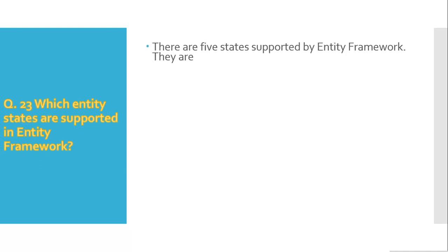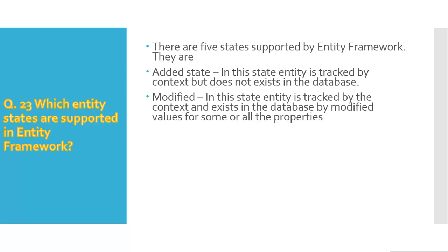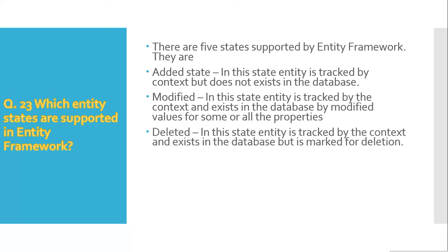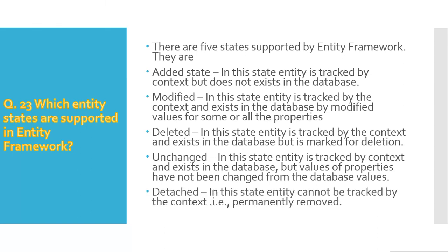Which entity states are supported in Entity Framework? There are five states: First, Added — the entity is tracked by the context but does not exist in the database. Second, Modified — the entity is tracked by the context and exists in the database, with modified values for some or all properties. Third, Deleted — the entity is tracked by the context and exists in the database but is marked for deletion. Fourth, Unchanged — the entity is tracked by the context, exists in the database, and no property values have changed. Fifth, Detached — the entity cannot be tracked by the context.